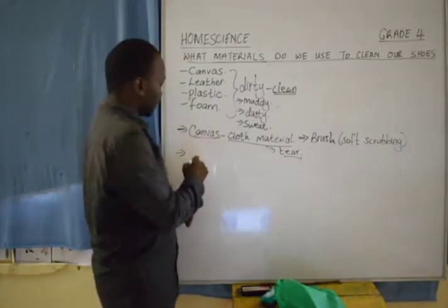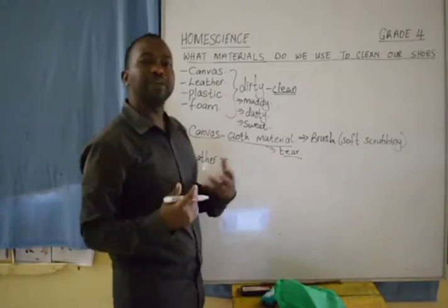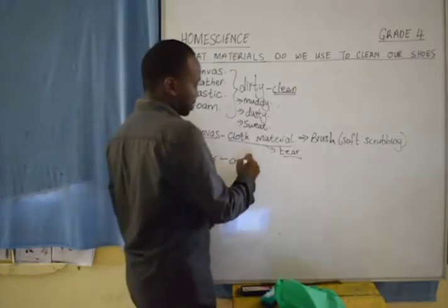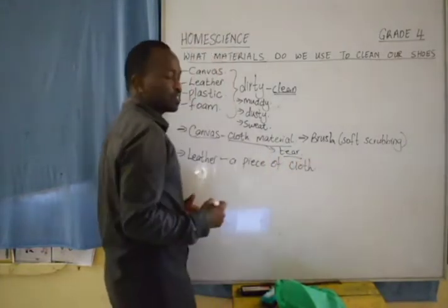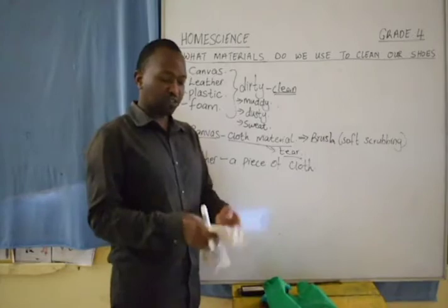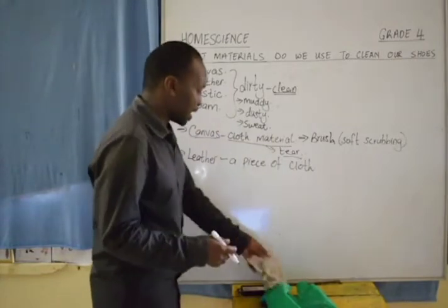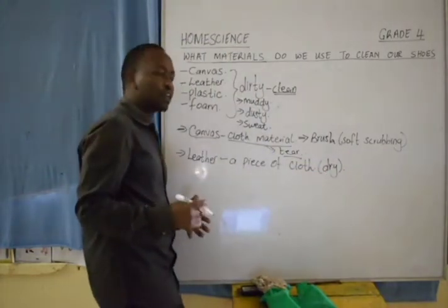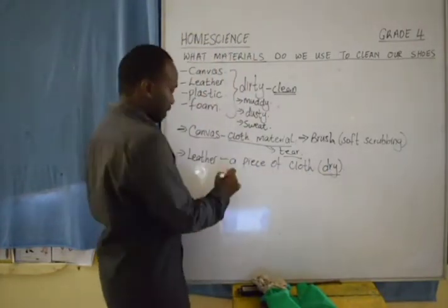We also have the leather shoes. Which are some of the materials you will use to clean them? Very good — a piece of cloth. A piece of cloth will be very good. First of all, wipe. If the shoe has a lot of dust, you wipe it with a dry cloth. It is important that we keep the leather dry so that it doesn't get spoiled. You use a dry piece of cloth to wipe off the dust.